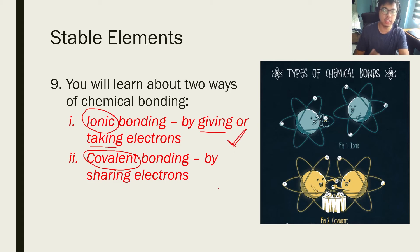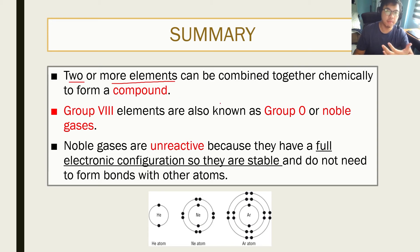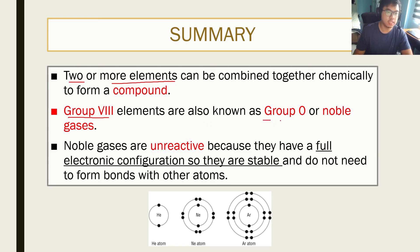Covalent bonding is something we will probably look at next month. To summarize this lesson: what is a compound? A compound is when two or more elements join together chemically. Some examples of compounds are water, sodium chloride, carbon dioxide, calcium carbonate, and so on. Group 8 elements are known as group 0 or noble gases — make sure you remember what they are called.